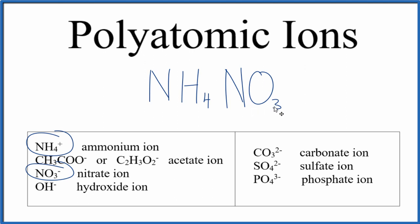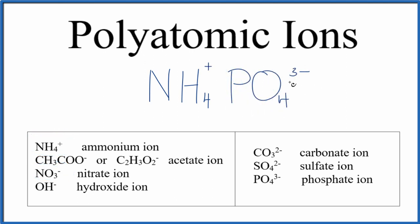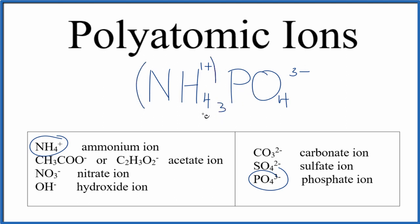Let's look at a more involved example: ammonium and phosphate. The charges need to balance, so we actually need three of these 1+ ammonium ions to balance the phosphate out. We put a 3 here, and we need to put parentheses. Now we have 3 times 1 plus, that's 3 plus, and 3 minus — charges balance out. We have our ionic compound. So yes, we can have ionic compounds with two different polyatomic ions.